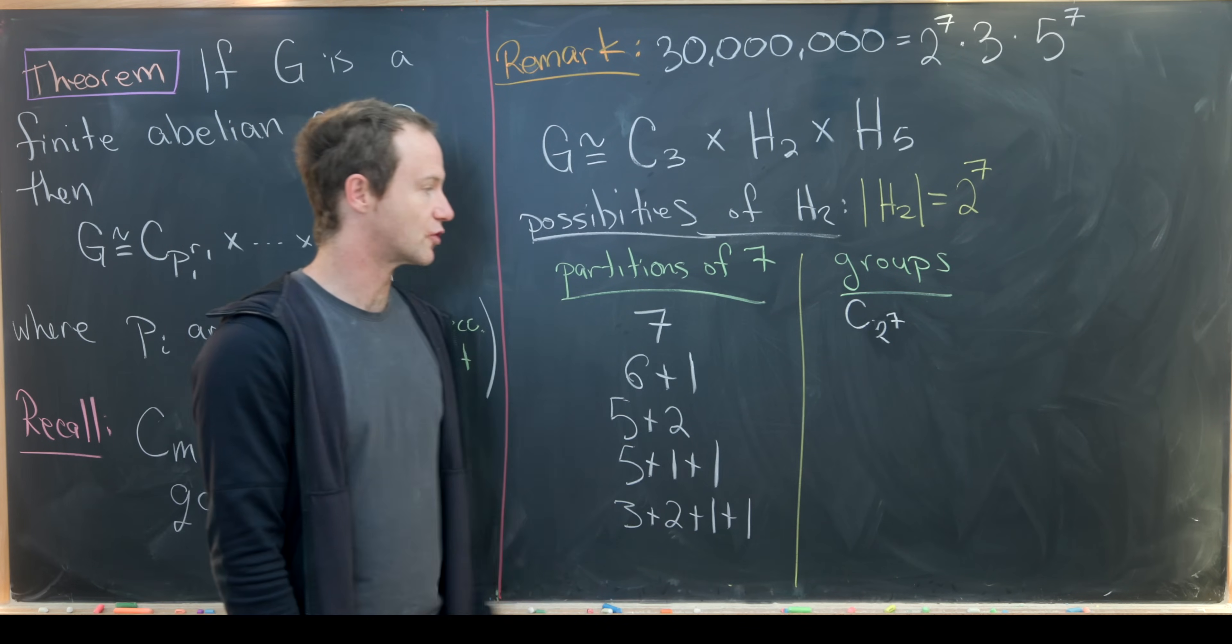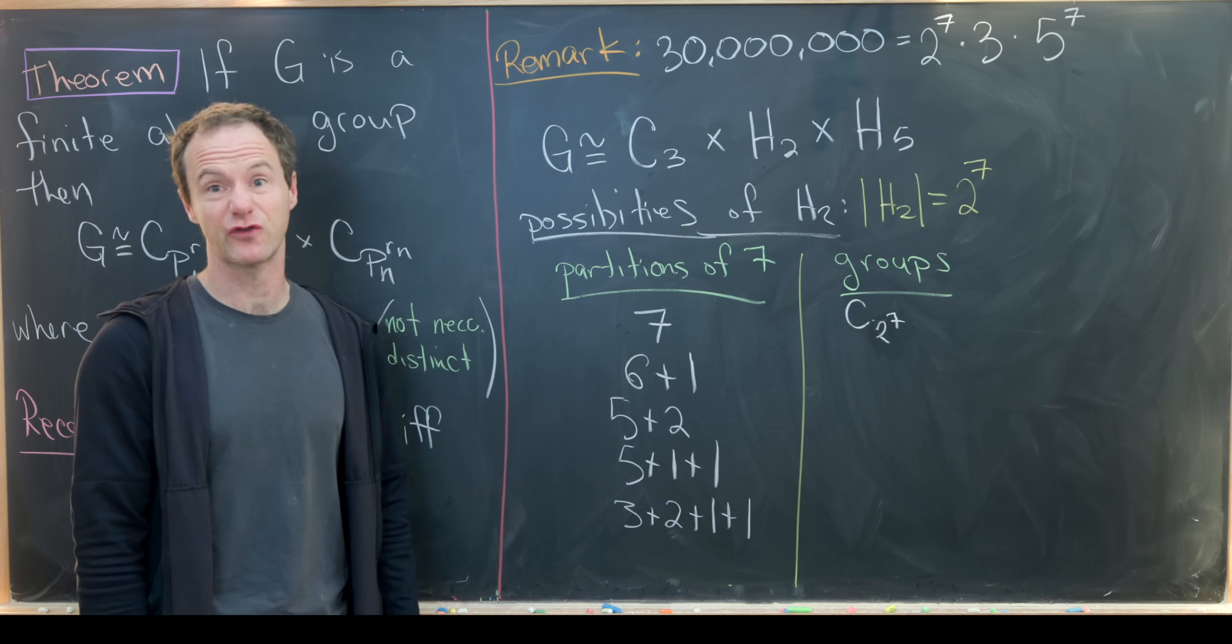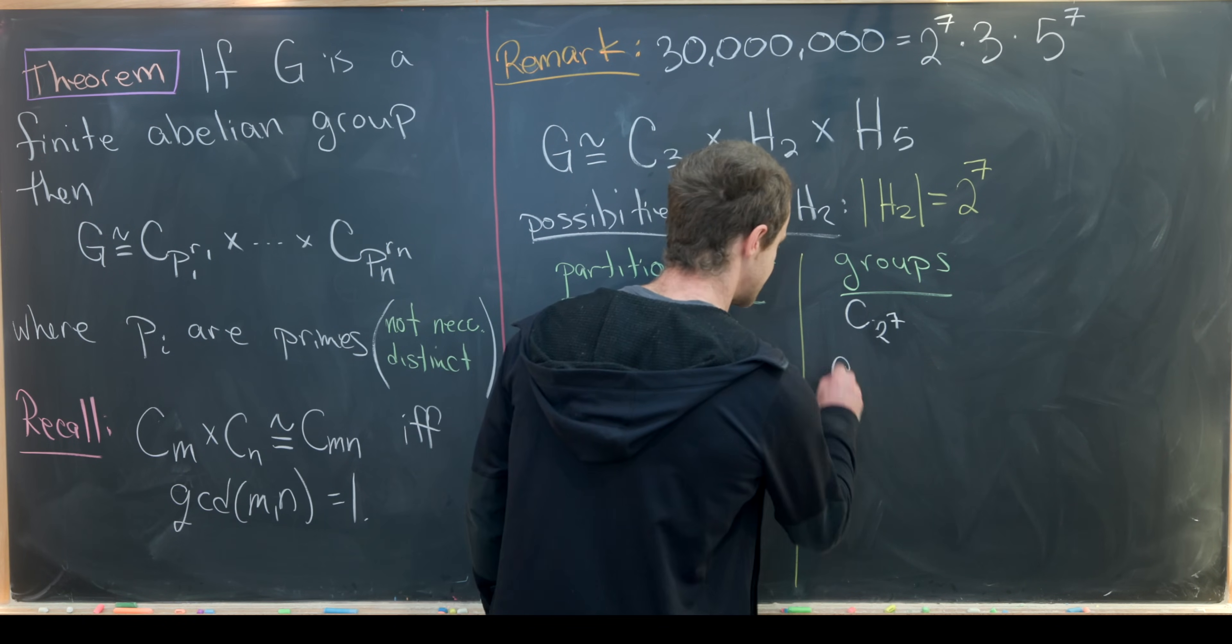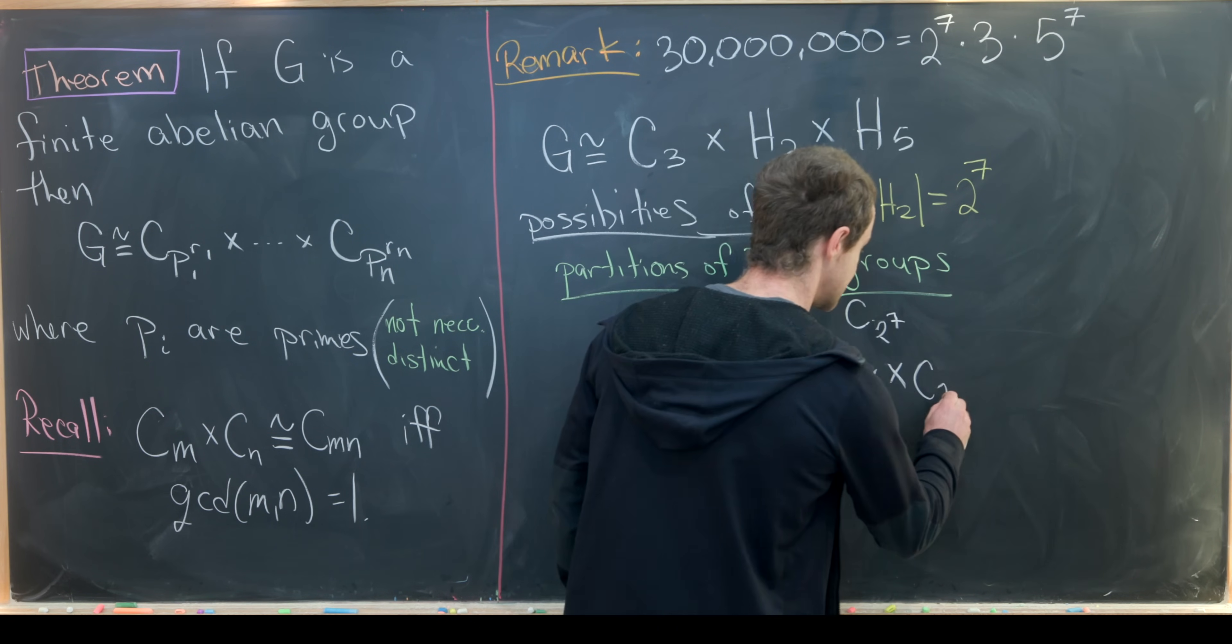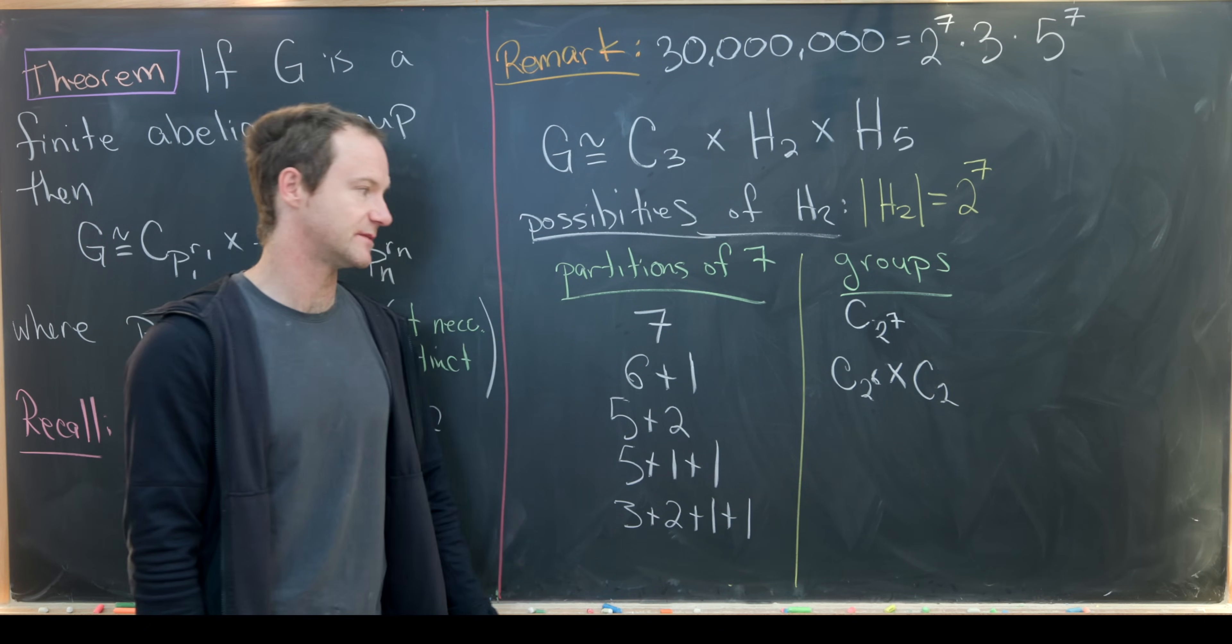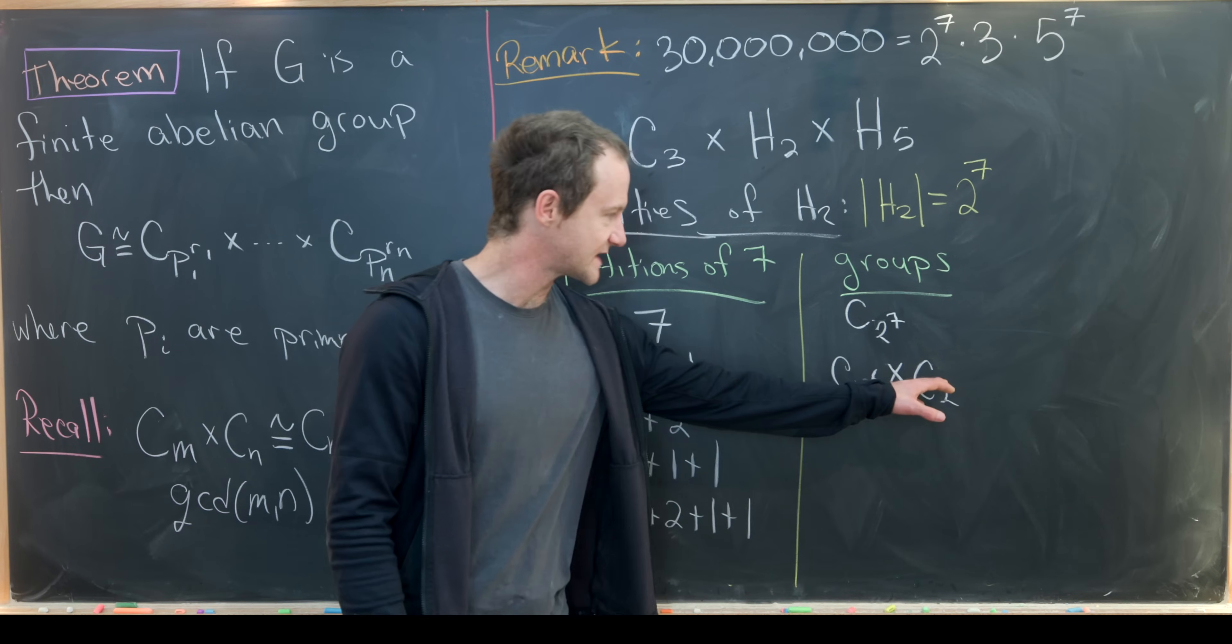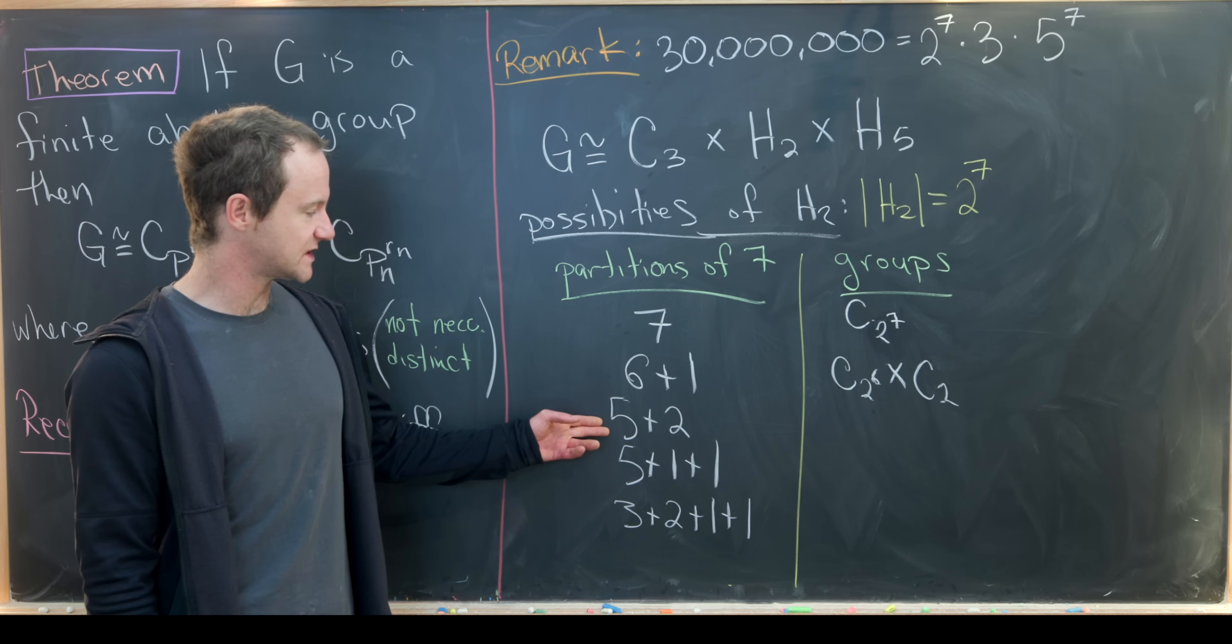This is the group of rotations of a 2 to the 7 gone - a 128 sided polygon. Then what about 6 plus 1? We associate that to C 2 to the 6 cross C 2. That's the rotational symmetries of a 64 gone and the rotational symmetries of a rectangle. We use a rectangle here because there's no such thing as a 2 gone in Euclidean space.